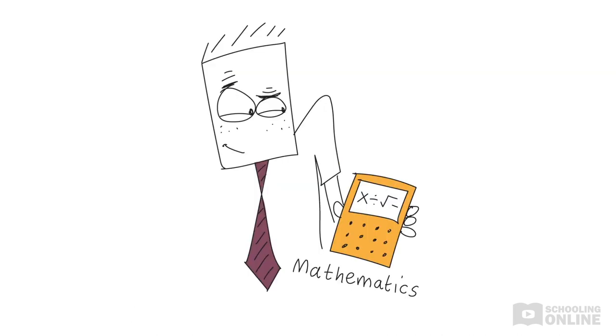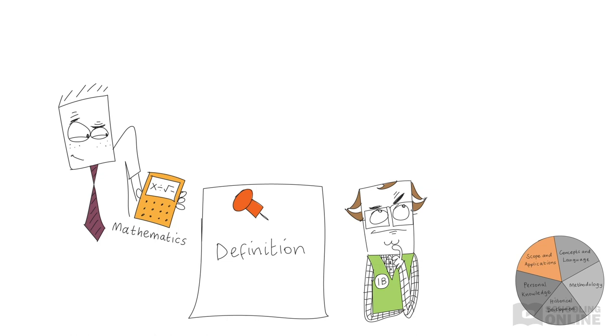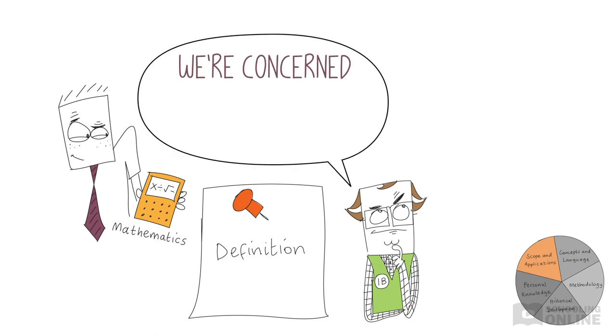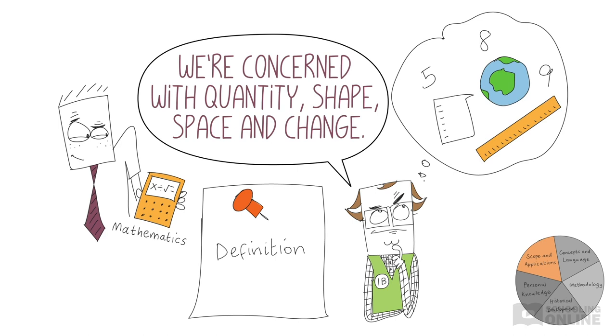First up, mathematics. What are the scope and applications of mathematics? That is, what is maths actually about? It's hard to pin down a definition. This is how the IB defines the scope of mathematics: it deals with numbers and quantities, with shapes and spaces, and with rates and changes. Even though we can define mathematics in other ways, let's stick with this definition for now.